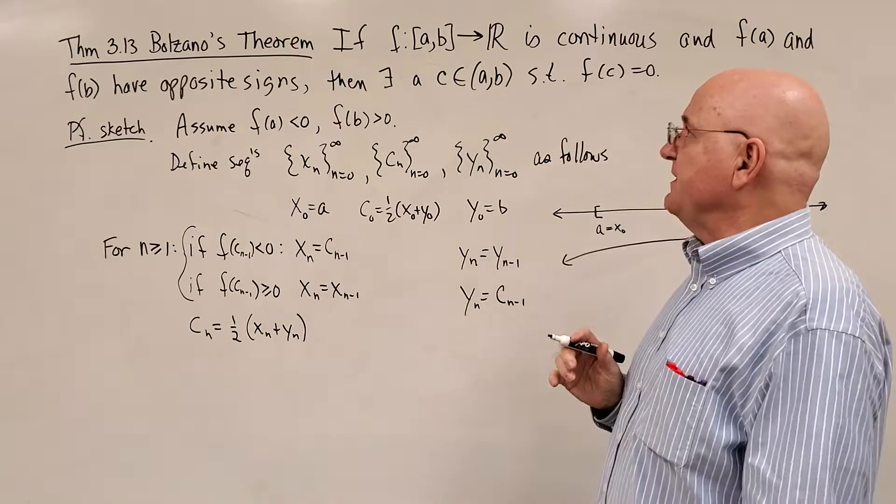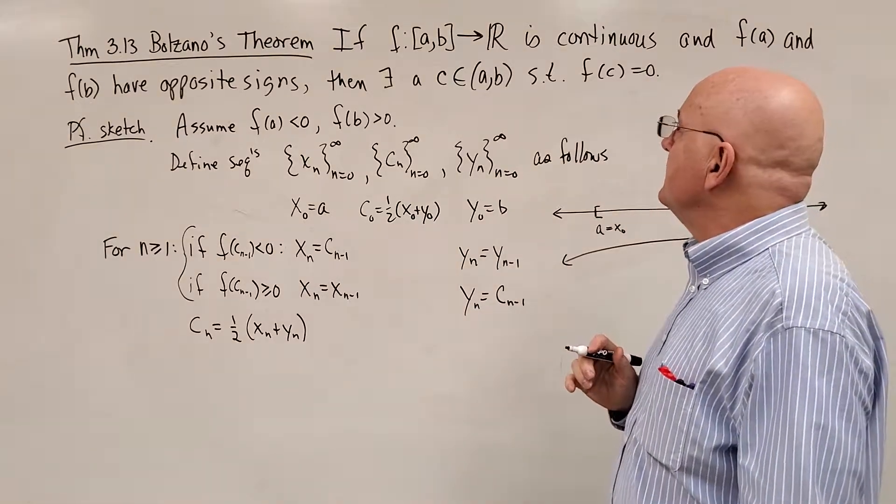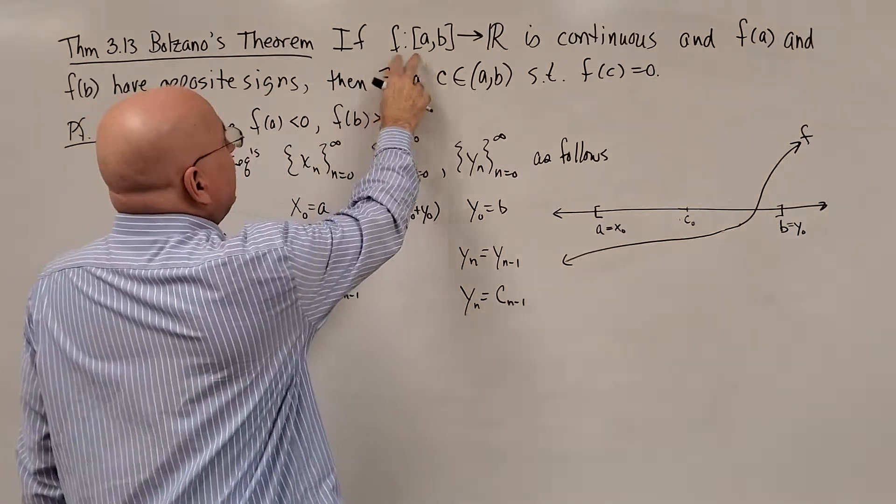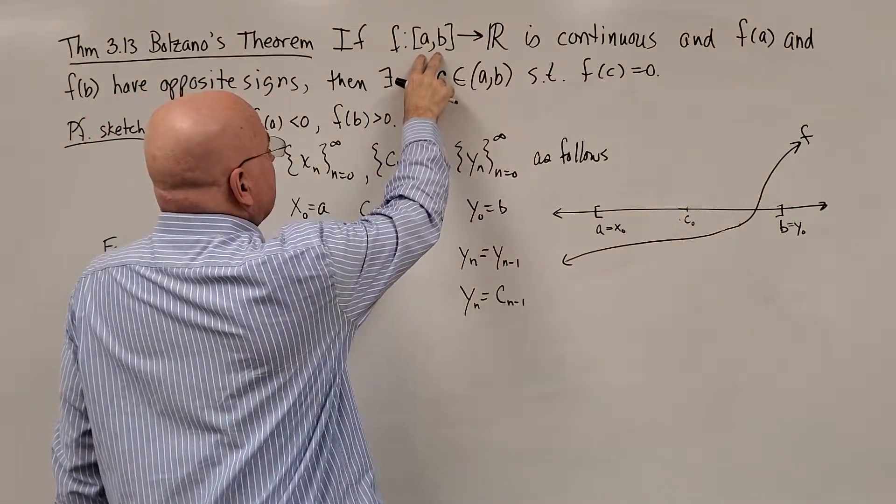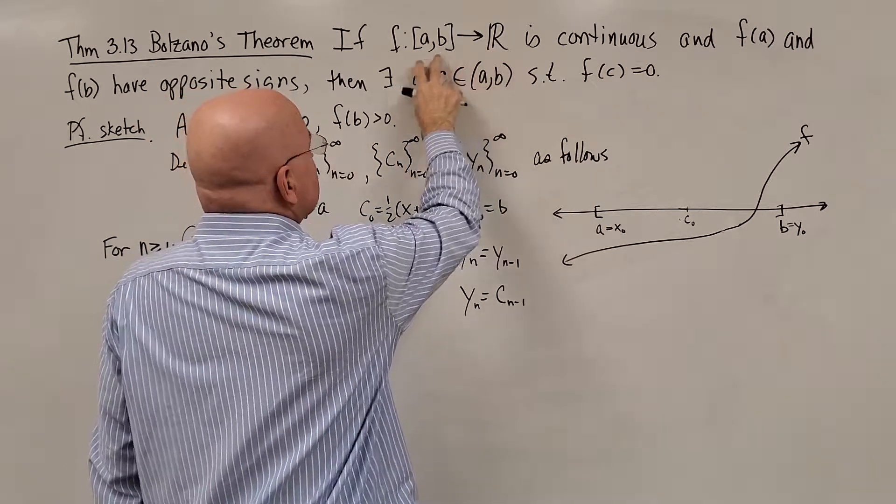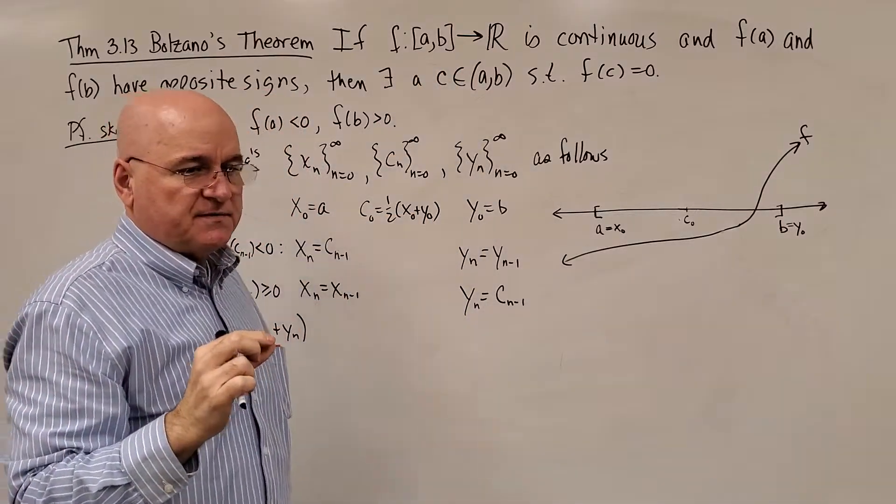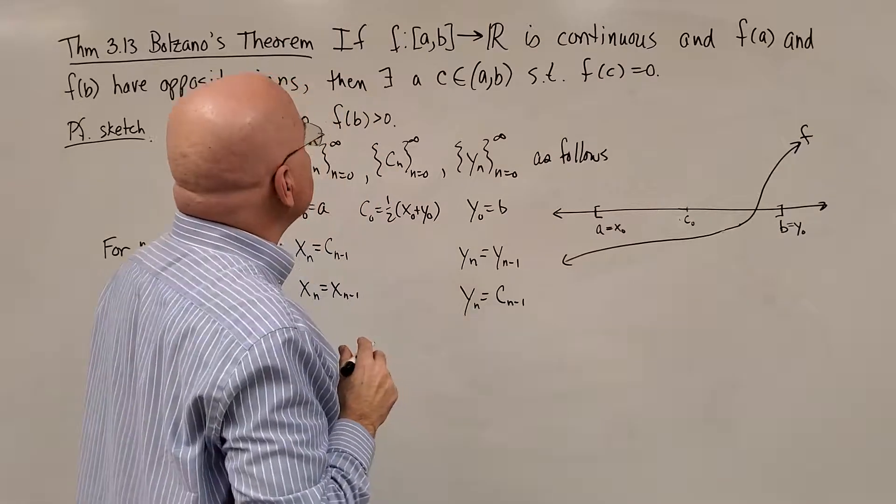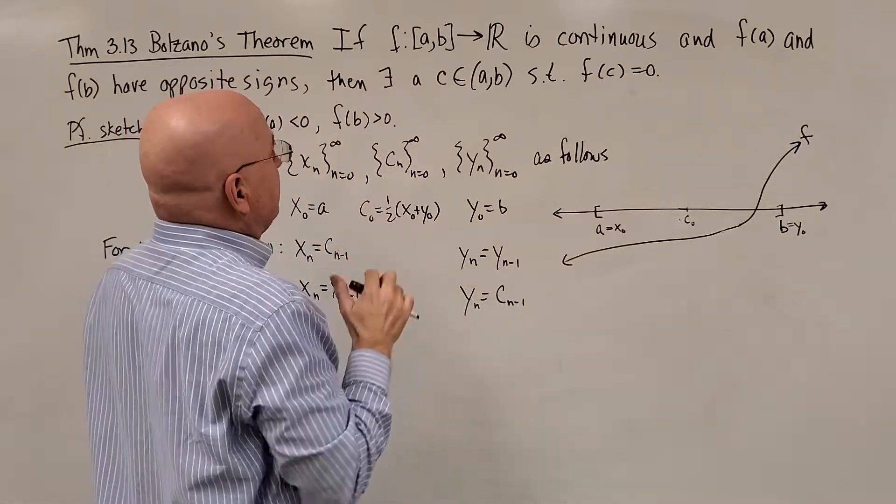It's a little bit more specific than the intermediate value theorem. And it starts off: if f mapping the closed interval from a to b into R, so it requires Bolzano's Theorem requires that the domain be a closed interval, closed bounded interval.